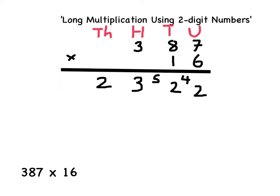For the next step of my long multiplication, I must multiply by the next part of the number that I am multiplying by. This means the 1 in 16, which represents 10. So the next step is 387 multiplied by 10.